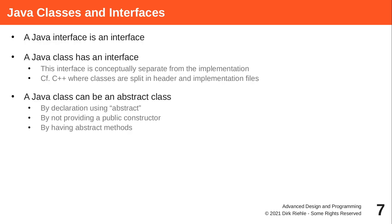In Java, there is a keyword to define just an interface without an implementation — we simply say 'interface.' A class either states that it implements an interface, meaning it will provide those methods eventually, or it has an implicit interface as shown by the methods it declares. Even if a Java class does not implement a Java interface, it still has an interface demonstrated by the methods it declares.